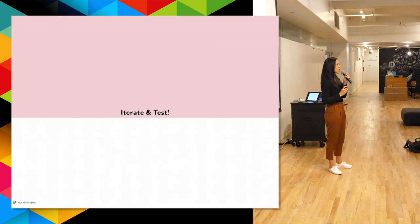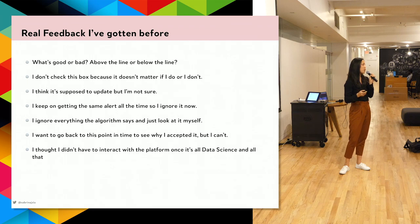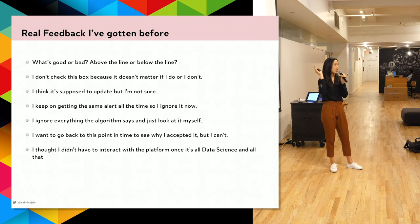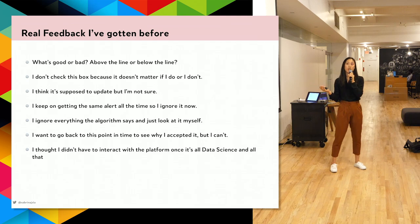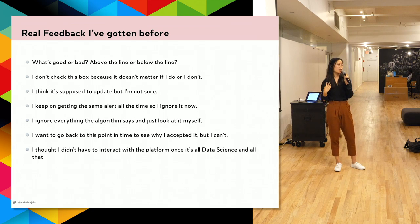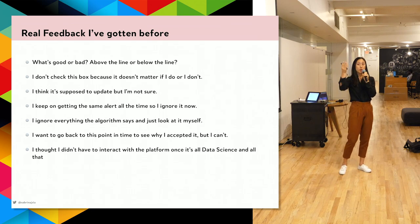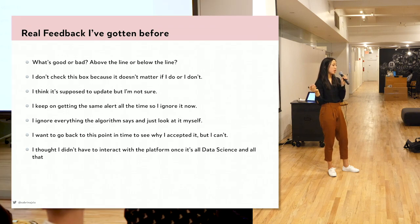We should always iterate and test. Here's real feedback I've gotten from designing products similar to this: I drew a trend graph with a line in the middle and people's first question was 'is above the line good or is below the line good?' No incentive to check the box — they give up if the model doesn't update. They don't know what's supposed to happen. The model keeps sending alerts but doesn't update with their feedback, so they feel it's useless.